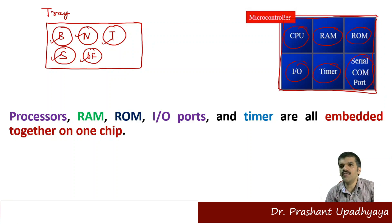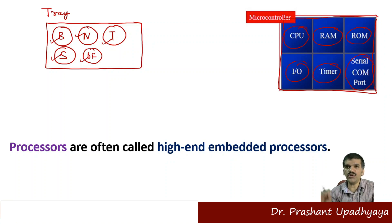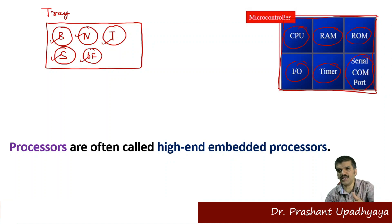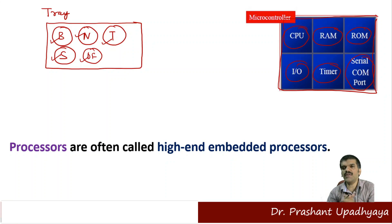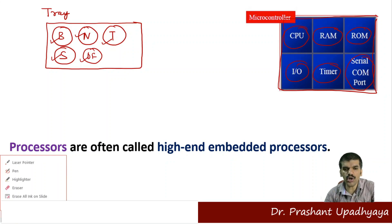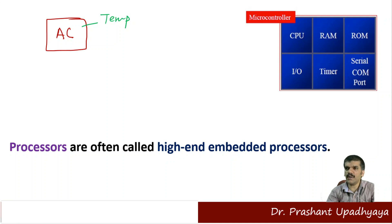So the processor, RAM, ROM, input/output port, and timer are all embedded together on one chip. Sometimes when we talk about the CPU in laptops or mobile phones, you will not hear that we are using a microcontroller. You will hear about the microprocessor — like i3 generation, i7 generation, or i5 generation microprocessor. When we talk about an AC or fridge, you will not hear about a microprocessor — we are using a microcontroller. Because a microcontroller is used for only one or two tasks. For example, the purpose of an AC is to maintain room temperature — nothing more.